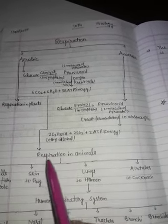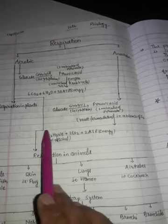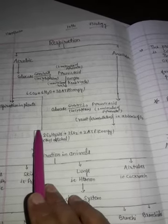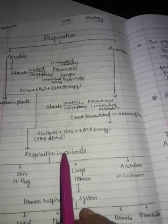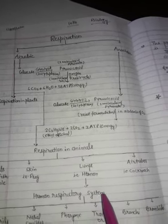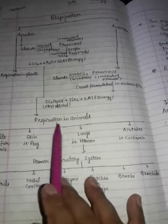Respiration in plants. Aerobic respiration is divided into two parts: respiration in plants and respiration in animals.